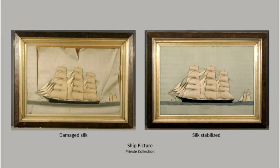Complex and heavily damaged objects should only be treated in consultation with a conservator to prevent further damage. A conservator can repair certain silk textiles using supportive linings and conservation-grade adhesives. Unlike adhesives available to the public, those used by conservators are selected because they are reversible. Any other type of adhesive repair should be avoided.